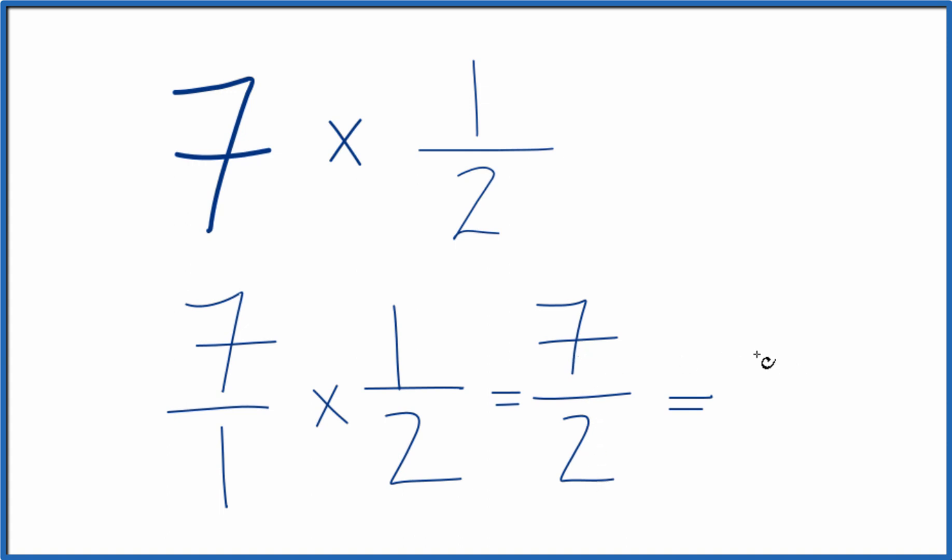2 goes into 7 three times, so 3 times 2, that gives us 6, and we have 1 left over. Bring the 2 across.